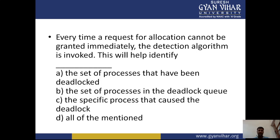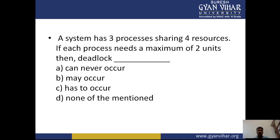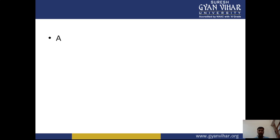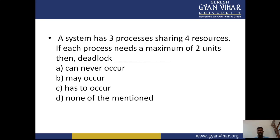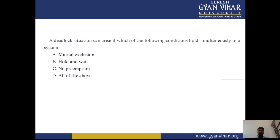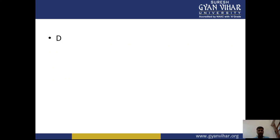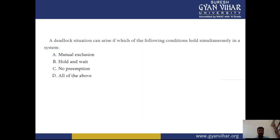MCQ 7: A system has three processes sharing four resources, and each process needs a maximum of two units — deadlock can never occur. Answer: A. MCQ 8: A deadlock situation can arise if which conditions hold simultaneously? — Mutual exclusion, hold and wait, non-preemption, and circular wait all occur together. If any one of these conditions can be violated, deadlock can be avoided.